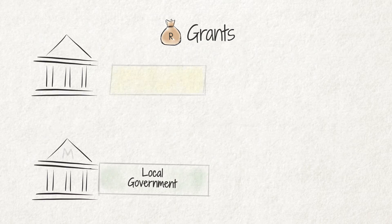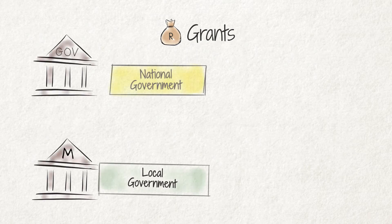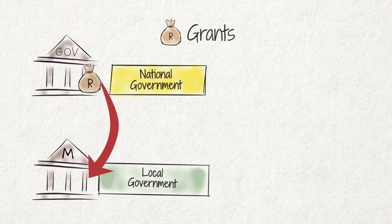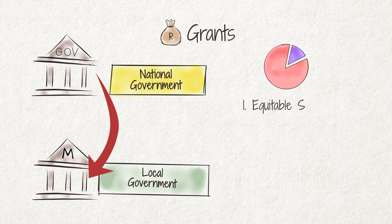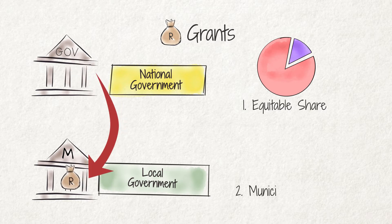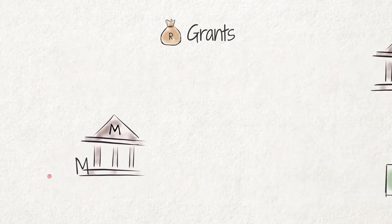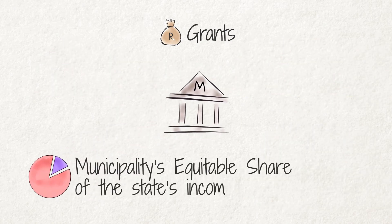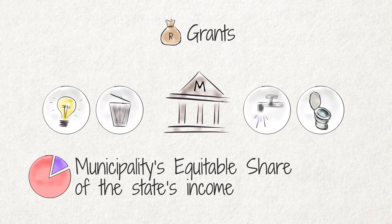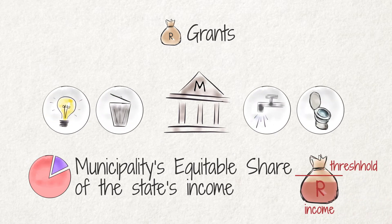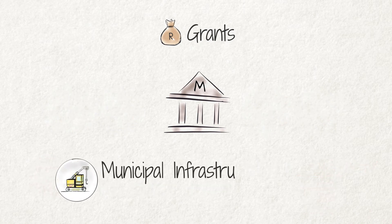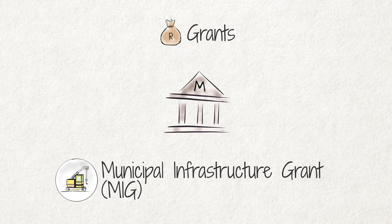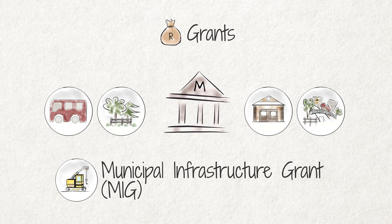All municipalities receive money in the form of grants from the taxes that the national government collects. One grant is the municipality's equitable share of the state's income from nationally collected taxes, and the other is the Municipal Infrastructure Grant. The municipality's equitable share is used to help pay for the cost of basic services for people whose income is below a certain threshold. The Municipal Infrastructure Grant, called MIG, is designed to help pay for the construction costs of basic infrastructure services that mainly benefit the poor.